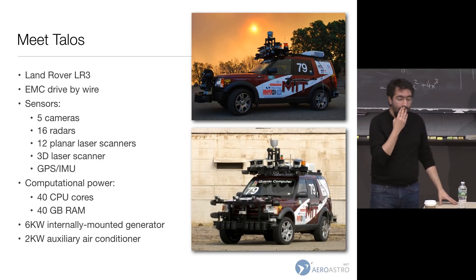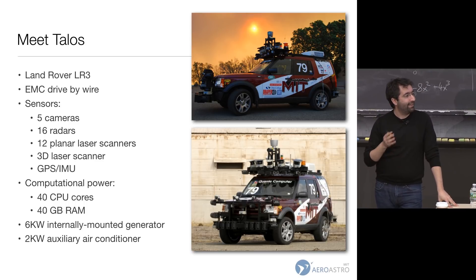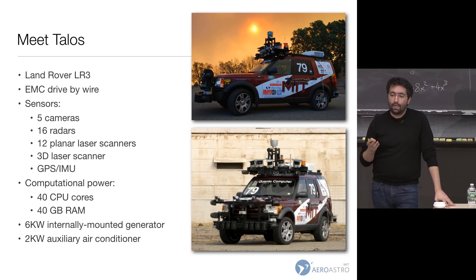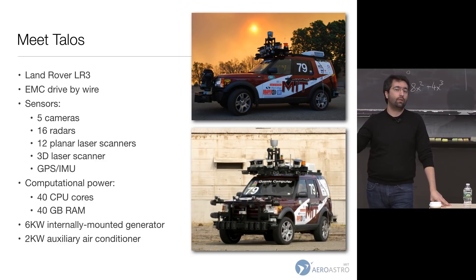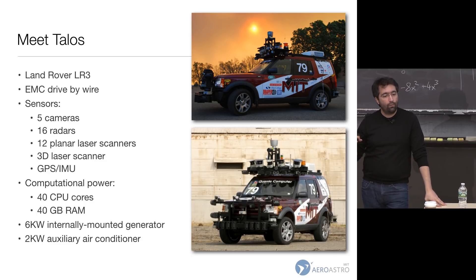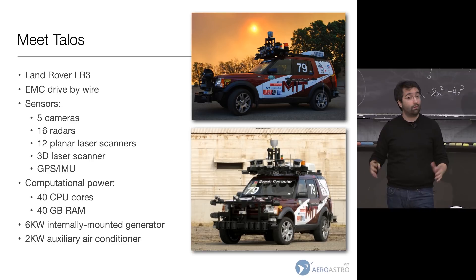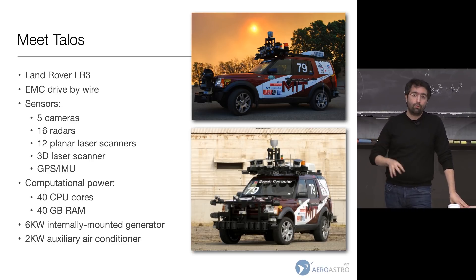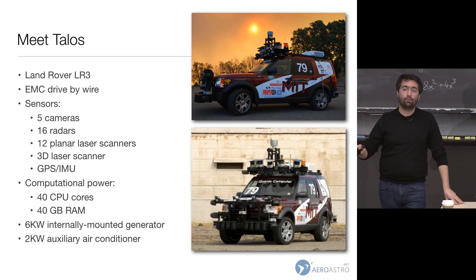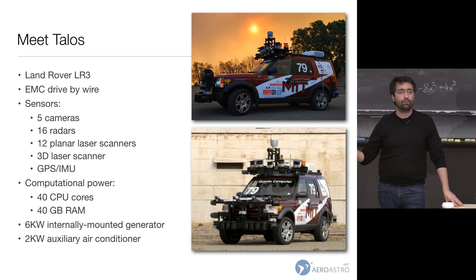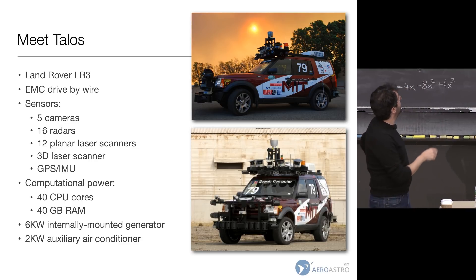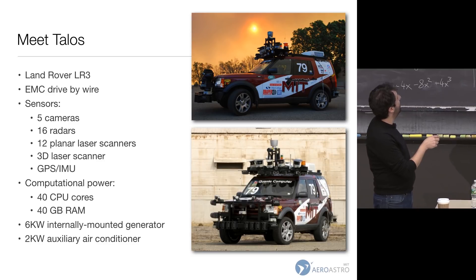We needed to put a lot of sensors on it. Our situation was that there were many other experienced teams — they had done the other Grand Challenges. We were talented but not experienced, and we had a lot of sponsors so we had a lot of money. Our strategy became: if it fits on the vehicle, put it on and figure out a way to use it. We ended up with five cameras, 16 radars, 12 planar laser scanners, one 3D laser scanner, and one GPS IMU unit.